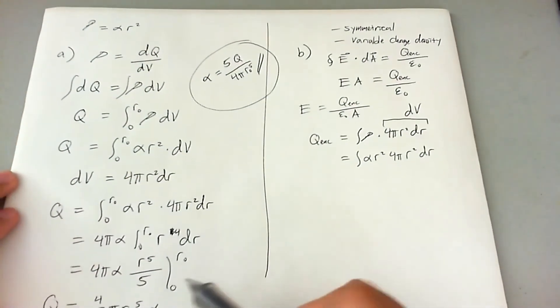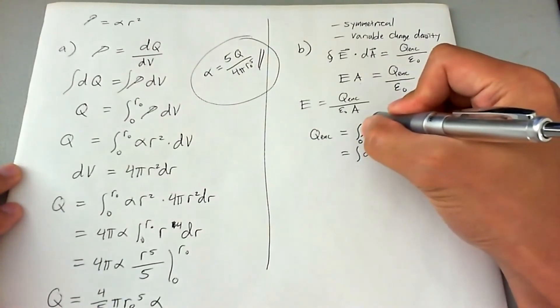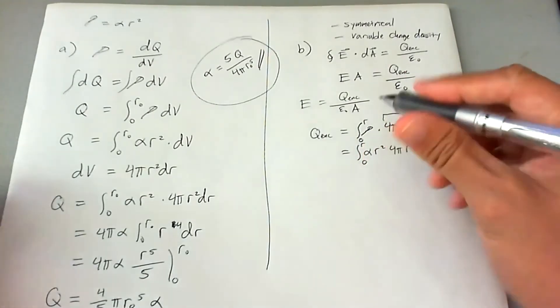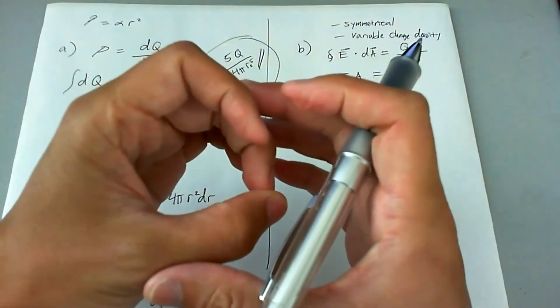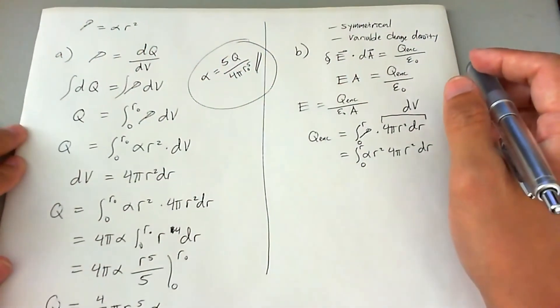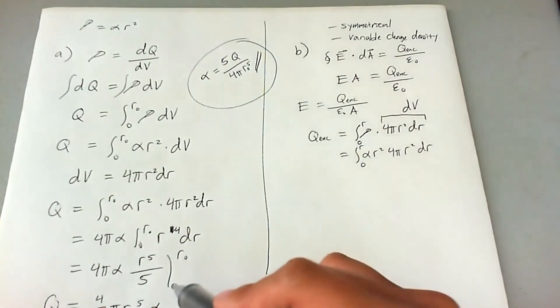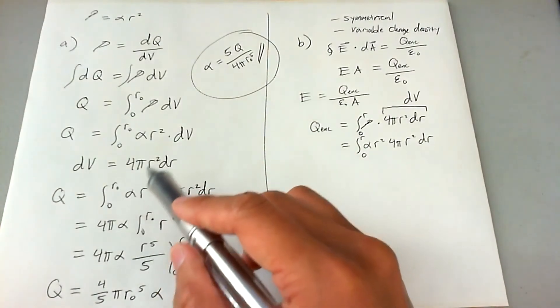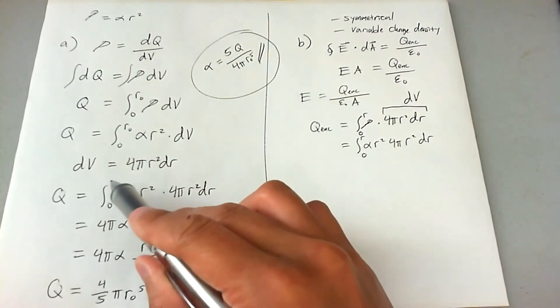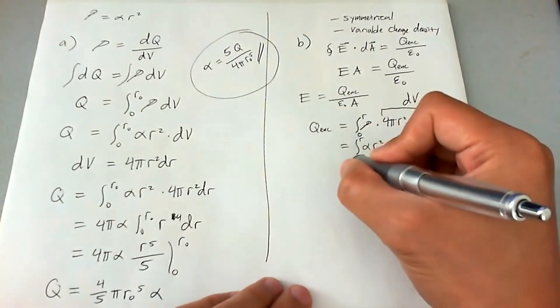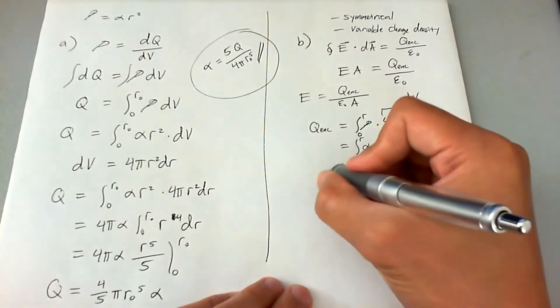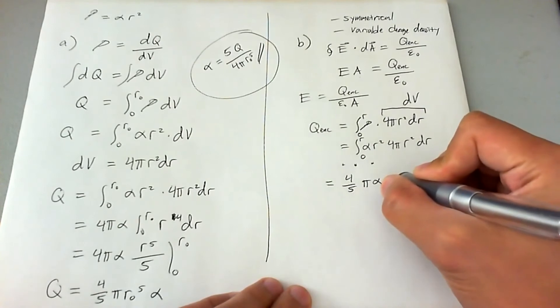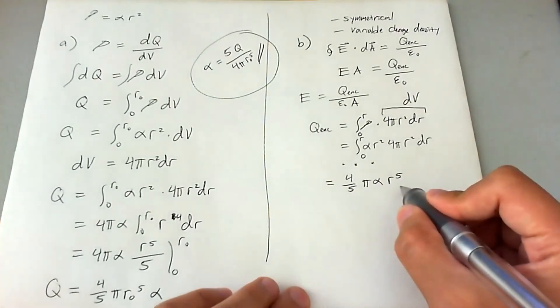Again, this is very similar to this. The only difference here is that we're going to go from 0 to r, which is the radius of the Gaussian enclosure. So instead of going over the entire radius of the sphere, we're only going over the little enclosure that we made in terms of the Gaussian shape. So the answer is actually going to be the same as this, except with r instead of r naught. And you can do this equation, or you can do this derivation with the upper limit of the integral being r instead of r naught to come to the same conclusion. So we're going to go ahead and skip that, say dot, dot, dot, and say that is then equal to 4 fifths pi alpha r to the fifth, not r naught, but r.